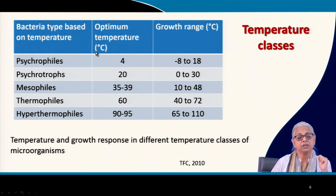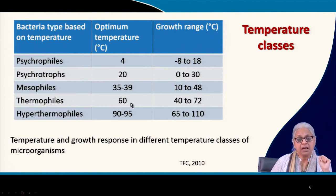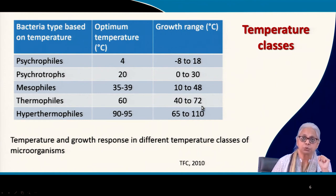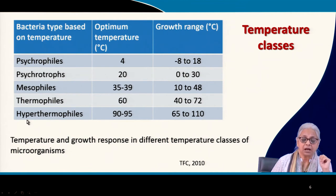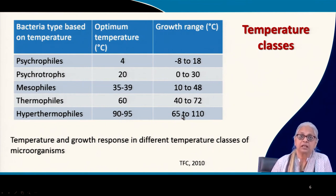These bacteria can and do exist in arctic as well as antarctic regions, or even higher altitude regions where temperatures are very low, like the Himalayas. They do not exist in your normal environment. Then we come to thermophilic bacteria, which have an optimum of 60 degrees centigrade and a range of 40 to 72 degrees centigrade.